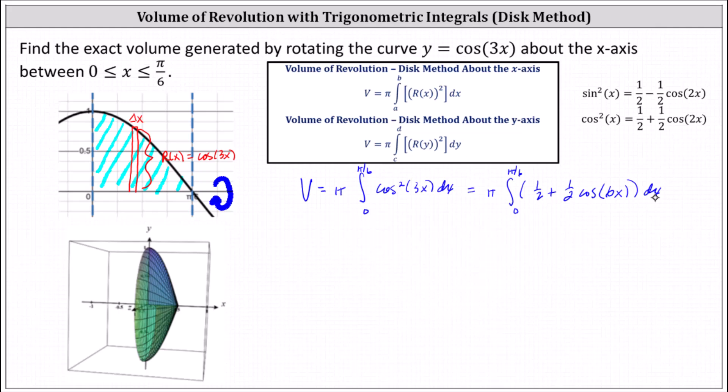To perform u substitution to find the anti-derivative of 1 half cosine 6x, let's break this up into two separate integrals. Volume v is equal to pi times the integral from 0 to pi divided by 6 of 1 half dx plus pi times integral from 0 to pi divided by 6 of 1 half cosine 6x dx.